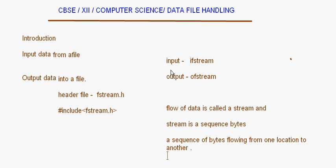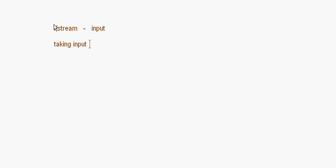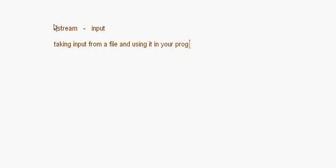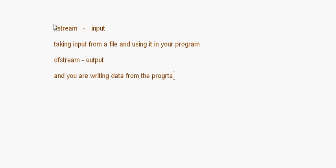ifstream is for input, meaning taking input from a file and using it in your program. ofstream is for output — you have written a program and you are writing data from the program to the data file, where it can be stored permanently. The concept of data file handling should now be clear — what is happening and what we are trying to do here.